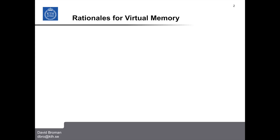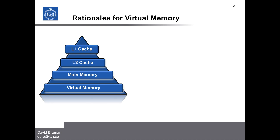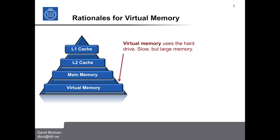So what is virtual memory? If we start by looking at the pyramid here of hierarchies of memories, at the top we have really fast memories but pretty expensive ones. So we have, for example, a cache. In this case we have two different levels of caches: one L1 cache that is faster and smaller, and one L2 cache that is slower but bigger. Then typically we have the main memory, but sometimes we want to swap out some of the data to another memory, for example a physical hard drive. And this is when virtual memory comes into place. Basically, virtual memory makes use of the hard drive, which is really slow but large and pretty inexpensive.